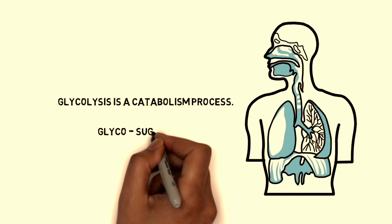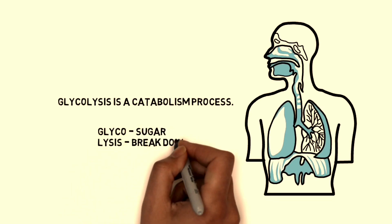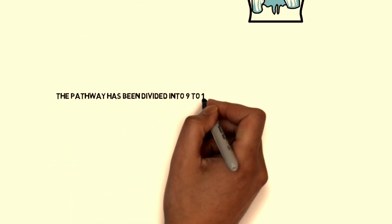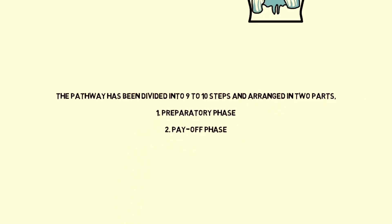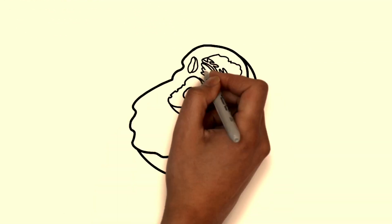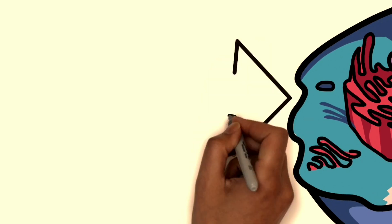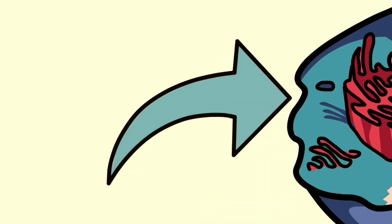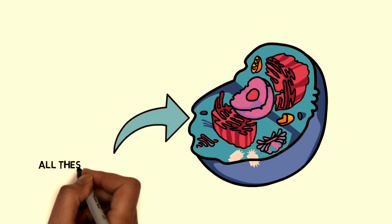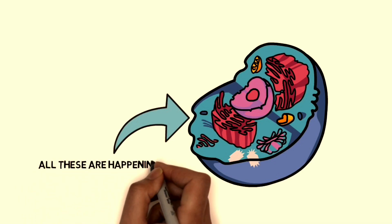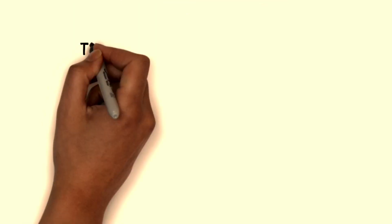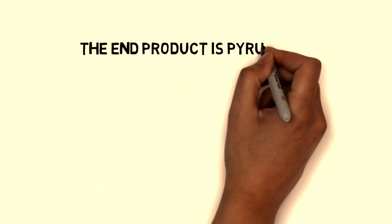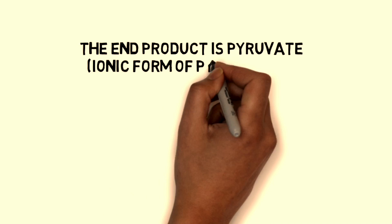Glyco means sugar and lysis means breakdown, so here sugar breakdown is happening. The pathway has been divided into nine to ten steps, arranged in two phases: one is the preparatory phase and the second is the payoff phase. The preparatory phase means ATP is used; the payoff phase means ATP is released. All these processes happen inside the cytosol. The end product of this reaction is pyruvate, which is the ionic version of pyruvic acid.